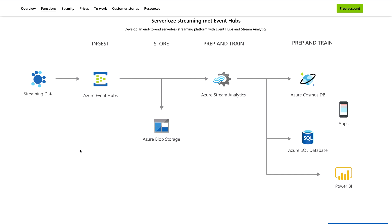On your screen you can see one example: where you have streaming data, you can use Azure Event Hubs to ingest it, store the data in Azure Blob Storage, then prep and train using Azure Stream Analytics, and finally consume the data directly in a Microsoft Power BI dashboard — or ingest it into Azure SQL Database or Azure Cosmos DB. Everything depends on your use case, but this is one of the best solutions for streaming data.